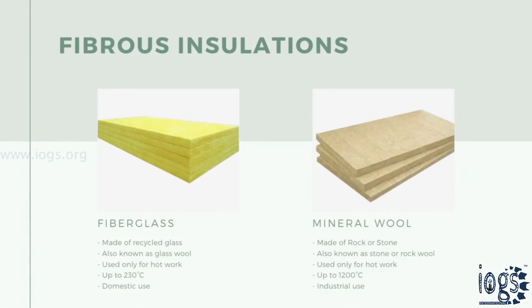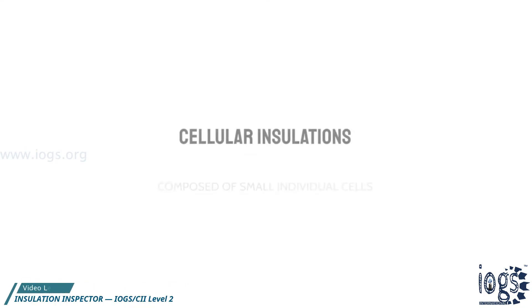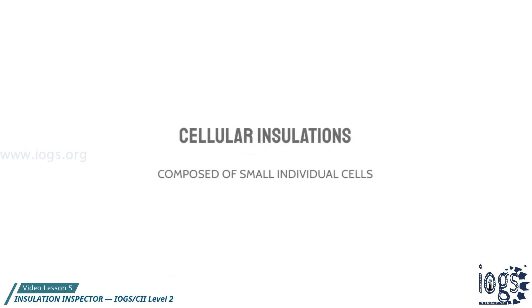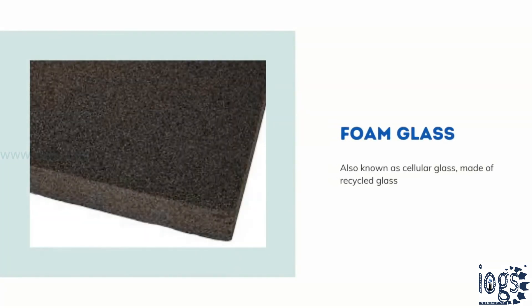Fiberglass and mineral wool are the two popular names of fibrous insulation materials, with mineral wool being the most used insulation material in the industry. Cellular insulations are composed of small individual cells separated from each other. One example of cellular insulation is foam glass, which is made of recycled glass.